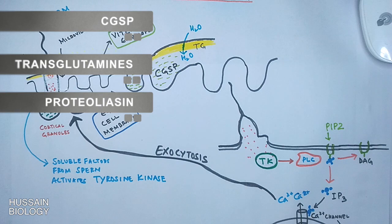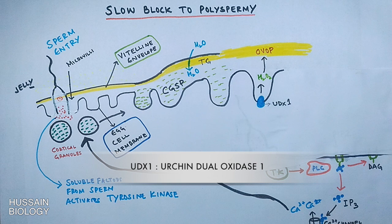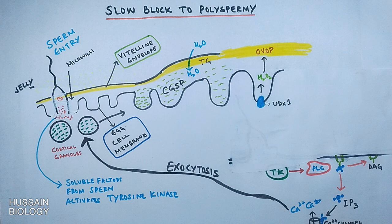Hydrogen peroxide is produced by the sea urchin egg, which eventually forms ovoperoxidase. It is UDOX1 — the urchin dual oxidase — which drives the conversion of molecular oxygen into hydrogen peroxide, and this is the source of that hydrogen peroxide.